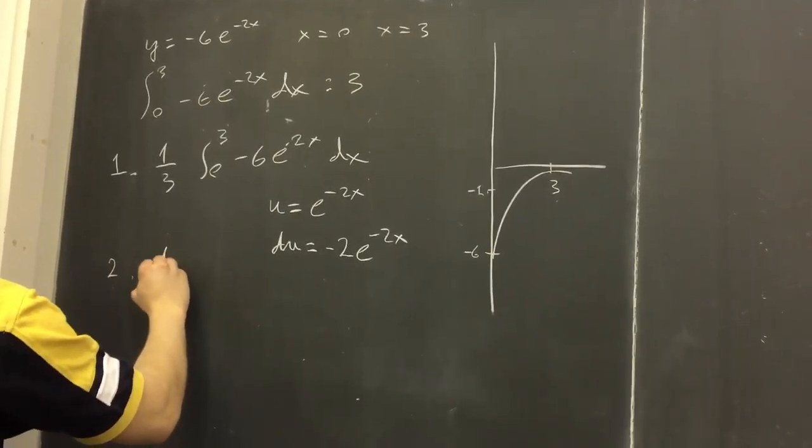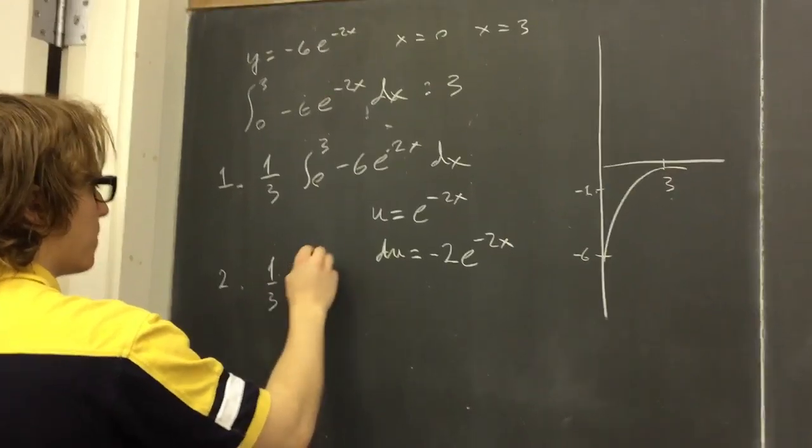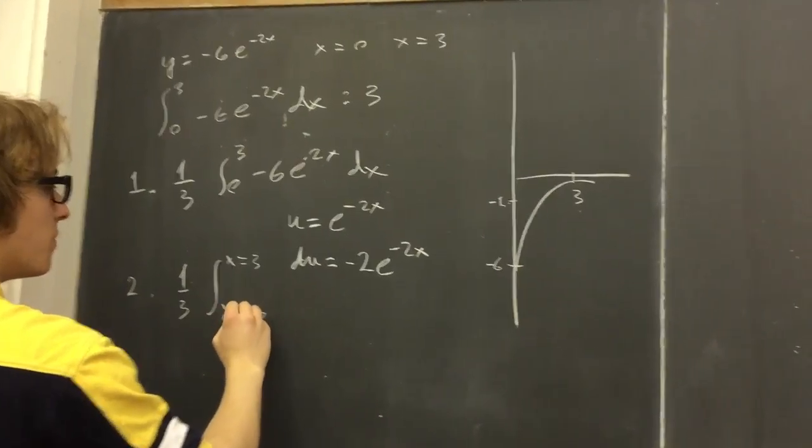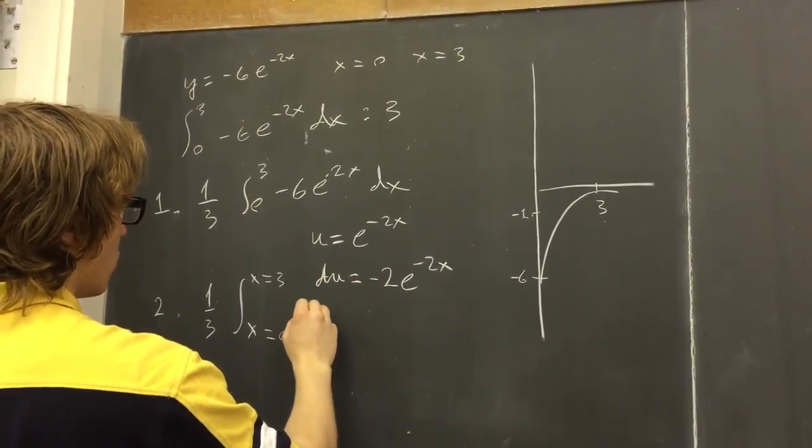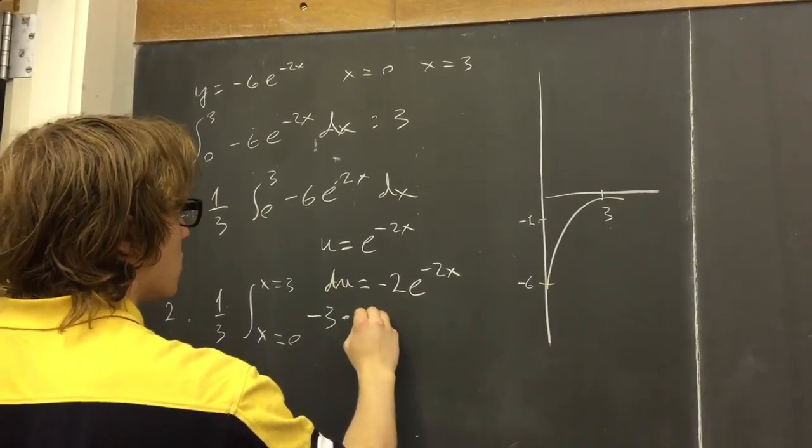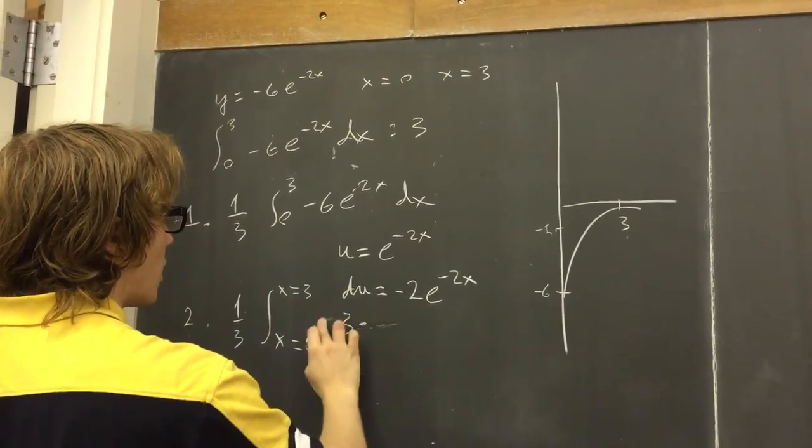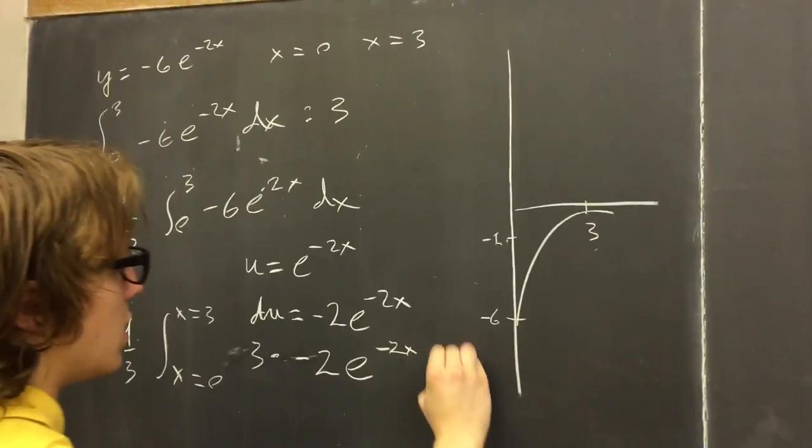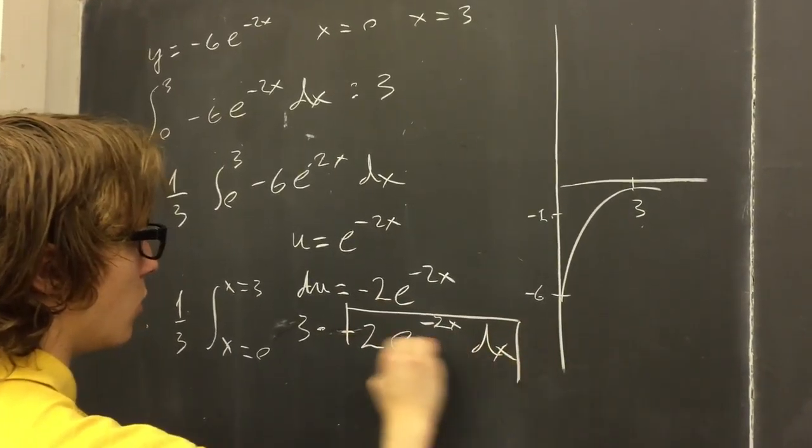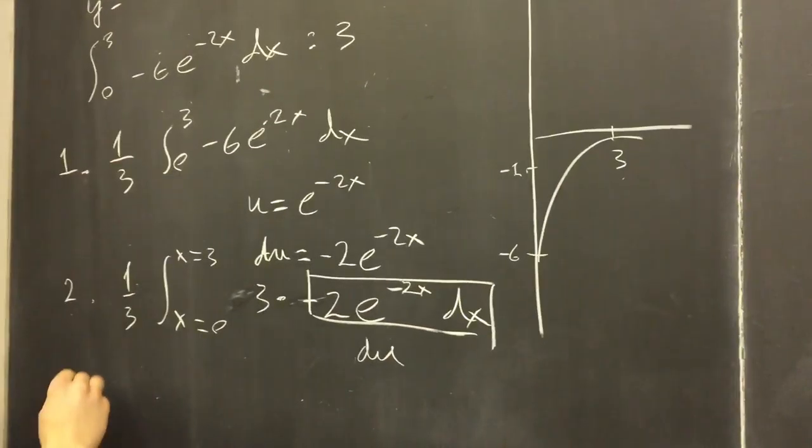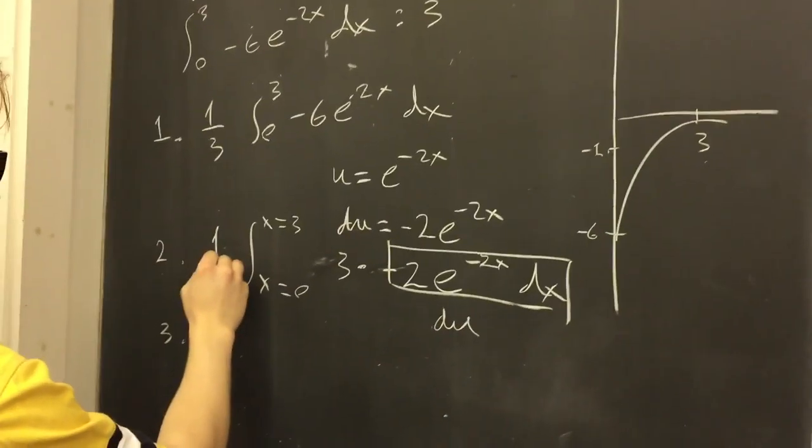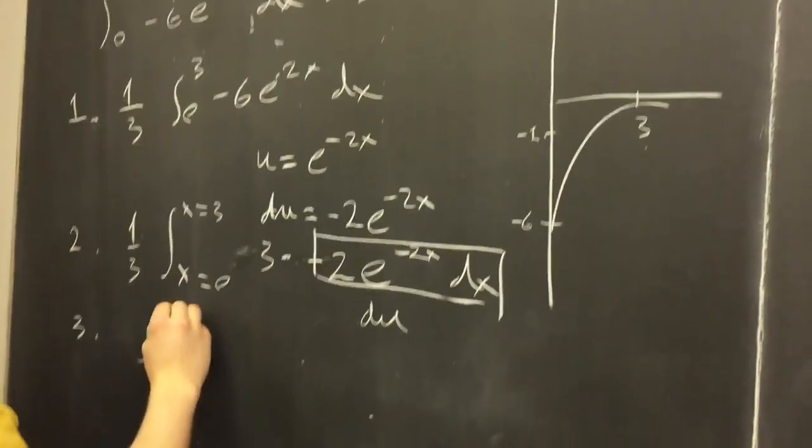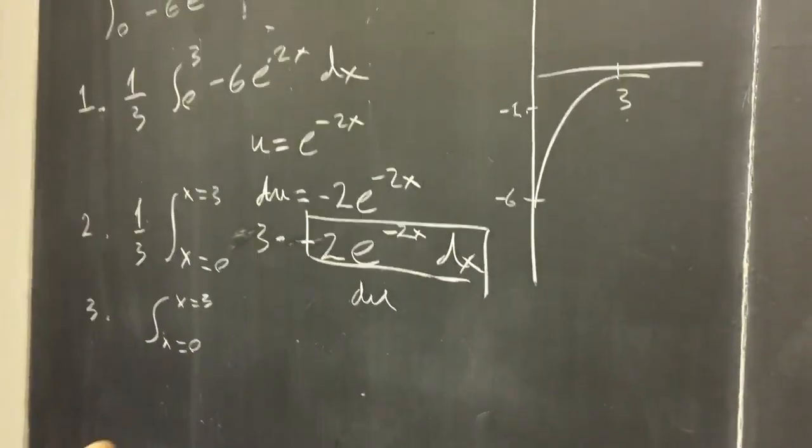And now if we rewrite the expression, we get 1 third times the integral from x equals 0 to x equals 3. And we get positive 3 times minus 2e to the minus 2x dx. And this whole expression will just be equal to du, so we get 1 third times 3 equals 1. So all we have is the integral from x equals 0 to x equals 3 of du.